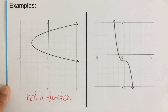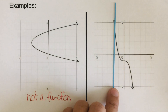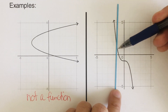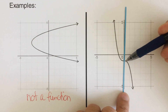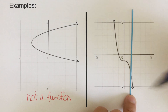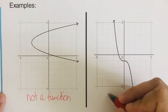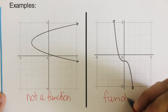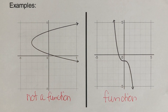Now let's take the next graph — we pass this vertical line here. It's touching at one point, and just one point as we move across. So this is a function since it's touching only at one point on this vertical line.